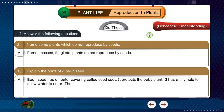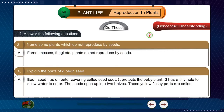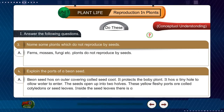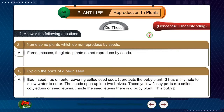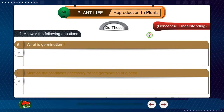The seeds open up into two halves. These yellow fleshy parts are called cotyledons, or seed leaves. Inside the seed leaves there is a baby plant. This baby plant has a tiny shoot and a tiny root.